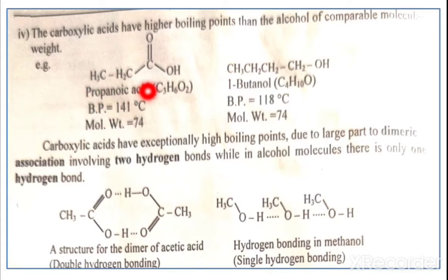The boiling point is 141 degrees Celsius and molecular weight is 74. Here is the structure of 1-butanol with boiling point 118 degrees Celsius and molecular weight 74.